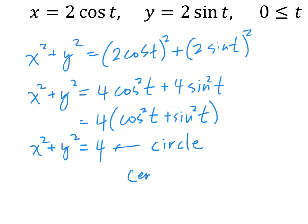x squared plus y squared equals 4 is a circle. So this is actually going to be a circle. If you graph this in parametric mode, you should see a circle. Where's the center? (0, 0). And the radius is 2. So when you see sine and cosine together, remember that sine squared plus cosine squared equals 1, and that gives you what you need. Also, good question — when you plug parametric equations with trig into the calculator, make sure you are in radian mode.